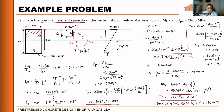Since tension controlled, phi equals 0.9. The factored nominal capacity is phi × Mn equals 0.9 × 492.483 equals 443.235 kN·m. This is the factored nominal capacity. The nominal capacity without phi is 492.483 kN·m. Depending on what is asked in the problem, either value may be the answer.